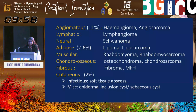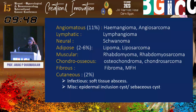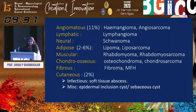Other lesions of different origins: vascular — hemangioma or angiosarcoma; lymphatic — lymphangioma; neural — neuroma; adipose — lipoma and liposarcoma; muscular — rhabdomyosarcoma and rhabdomyoma; cutaneous — infectious soft tissue abscess or epidermal inclusion cyst.